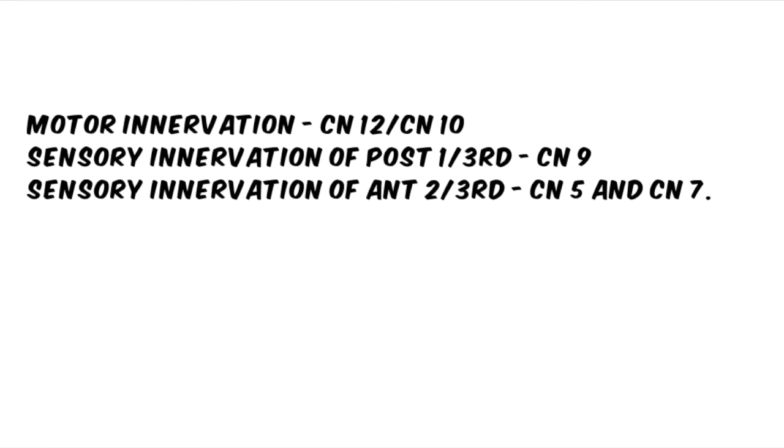So again, the motor innervation is by cranial nerves 12 and 10. The sensory innervation of the posterior one-third is by cranial nerve 9. The sensory innervation of the anterior two-thirds is by cranial nerves 5 and 7. That's it.